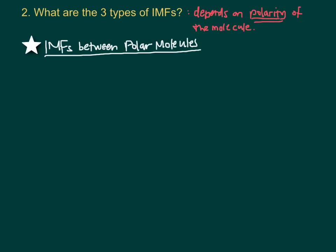There are three types of intermolecular forces, and the type of intermolecular force will depend on the polarity of the molecule. There are two types of molecules — those that are polar and those that are nonpolar — and we'll start with the intermolecular forces that can happen between polar molecules.